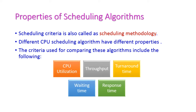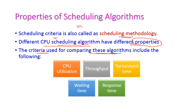The scheduling criteria, also called scheduling methodology, differ across CPU scheduling algorithms because every algorithm has its own properties and all those properties vary from algorithm to algorithm. Here we have some common criteria which are used to compare these scheduling algorithms: CPU utilization, throughput, turnaround time, waiting time, and response time. Let us see all those things one by one.